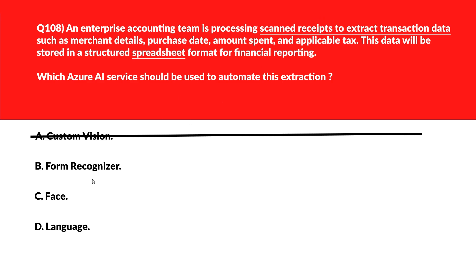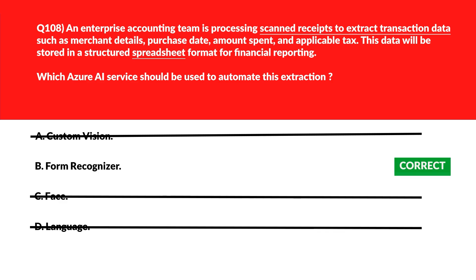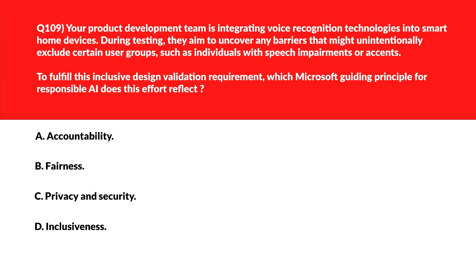Option C says Face — Face has nothing to do with receipts, so this is completely out of context. Option D says Language — Language has nothing to do with receipts or financial documents, so this is also out. We'll lock option B, Form Recognizer, as the right answer.